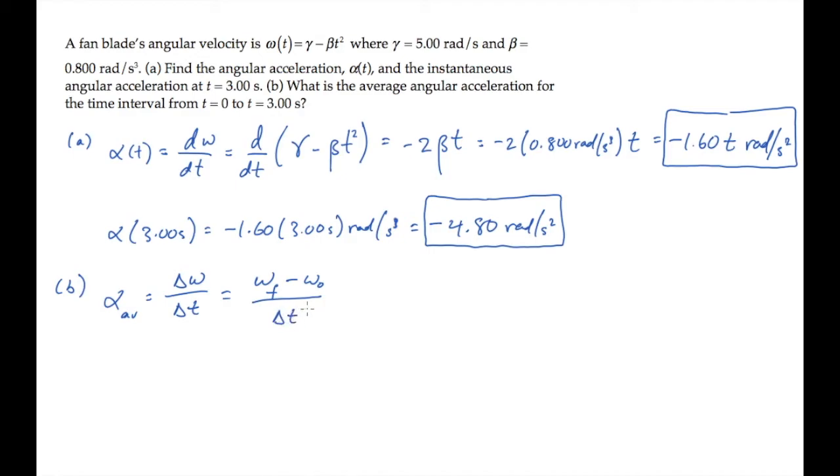And we can come down here to calculate those two omegas. The final value is the angular velocity at 3 seconds. We'll calculate that in a minute. The initial value is the angular velocity at t equals 0 seconds. Let's do that one first, because it just works out to gamma. And gamma, we're told in the problem, is 5 radians per second.